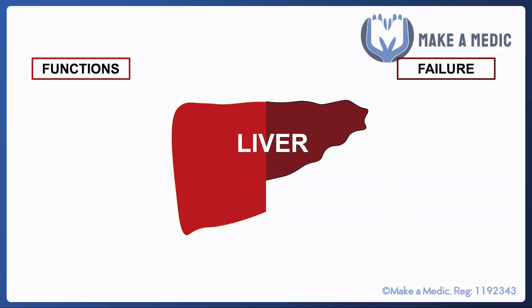The consequences of chronic liver disease can be figured out by first thinking about what the liver actually does. I'm going to list a few of the key functions of the liver on the left hand side and on the right hand side you'll see the consequences that arise when those functions are no longer fulfilled. One of the key functions of the liver is to produce albumin, which is important for hormone transport and also to maintain the plasma oncotic pressure so that we can establish an effective circulating volume.